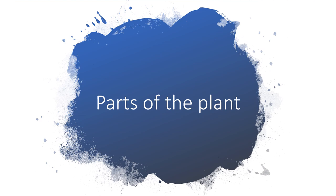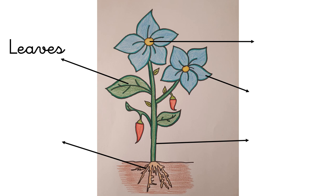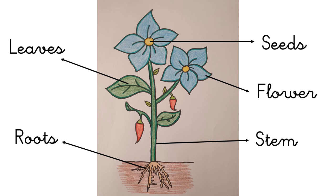Now we are going to study the parts of the plant. The most important parts of a plant are the leaves, the roots, the seeds to reproduce, the flower and the stem. Bye bye!